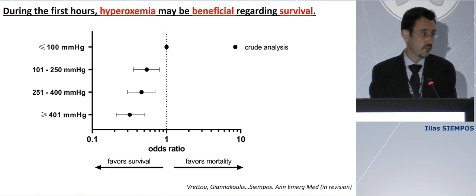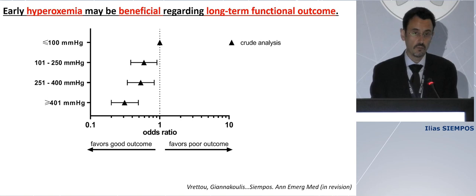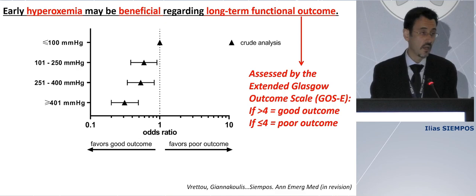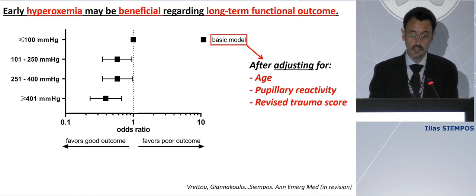This paper is currently in revision at Annals of Emergency Medicine. What we found: first, early hyperoxemia may be beneficial regarding survival — and actually the more the merrier. Even more importantly, early hyperoxemia may be beneficial regarding long-term functional outcome, again assessed by the extended Glasgow Outcome Scale. The higher the PaO2, the higher the probability that the patient will have a better long-term functional outcome. That was the crude analysis, and even after adjustment for age, pupillary reactivity, and revised trauma score, we found the same results.